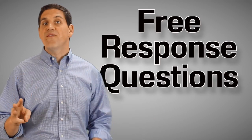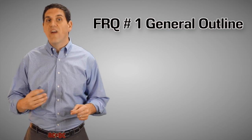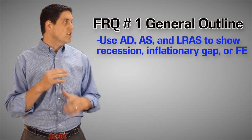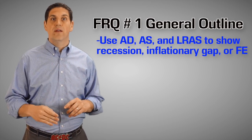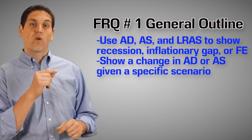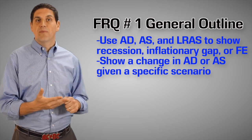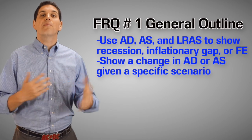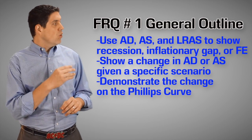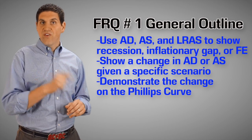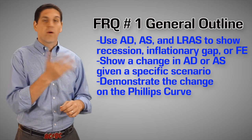There are three free responses on the AP macroeconomics exam. The first question is always very similar — it starts off with aggregate demand and aggregate supply and asks you to draw a recession, inflationary gap, or full employment. Then it usually asks you about some sort of shift or change in the economy, whether it's an increase in aggregate demand or a decrease in aggregate supply. Something they might also ask you to do is draw the whole situation over again using the Phillips curve — so if there's a recession, drawing it with aggregate demand and supply or drawing it with the Phillips curve.